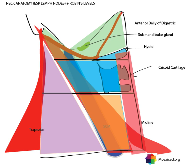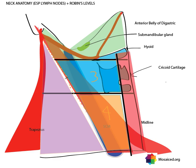We haven't yet put in the vertical borders. The sternohyoid muscle, going from the hyoid to the sternum, forms the medial border for levels three and four. The lateral border is the lateral border of the sternocleidomastoid. So Robbins level three is between the hyoid line and the inferior border of the cricoid cartilage, bordered laterally by the sternocleidomastoid and medially by the sternohyoid muscle.